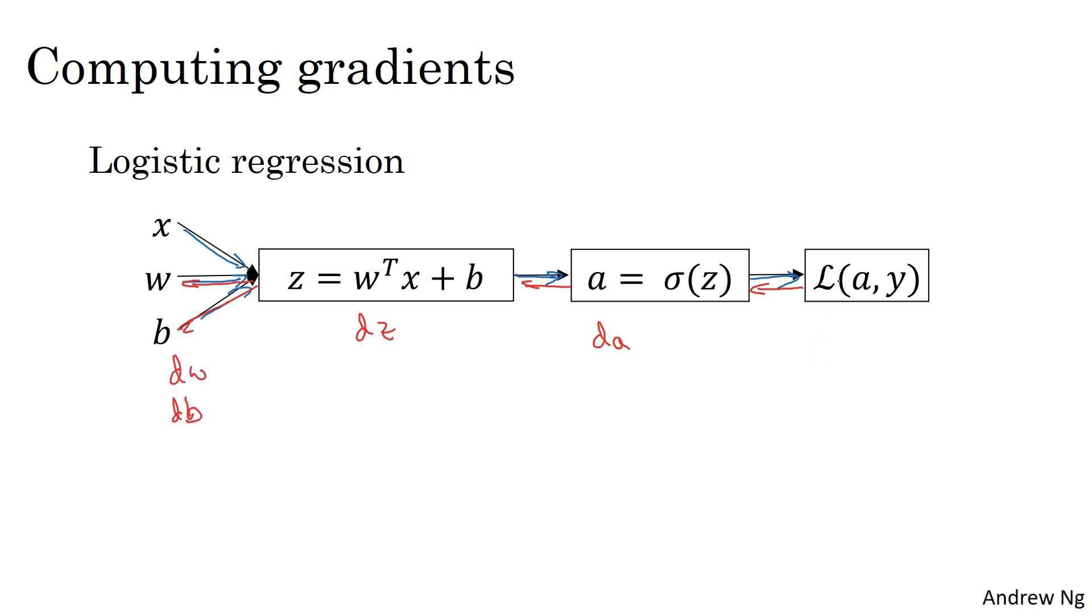The definition for the loss was L(a,y) equals negative y log a minus (1 minus y) times log(1 minus a). If you're familiar with calculus and you take the derivative of this with respect to a, that would give you the formula for da.